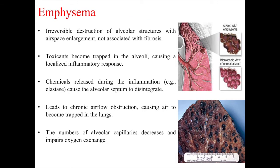We will now examine some conditions that can develop as a result of lung toxicity. First, emphysema is characterized by irreversible destruction of alveolar structures with airspace enlargement not associated with fibrosis, as shown in the diagram and lung biopsy. Toxicants become trapped in the alveoli causing a localized inflammatory response. Chemicals released during inflammation, such as the enzyme elastase, cause the alveolar septum to disintegrate. This leads to chronic airflow obstruction, causing air to become trapped in the lungs, and the number of alveolar capillaries decreases over time, impairing oxygen exchange.